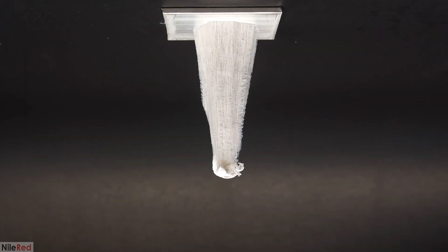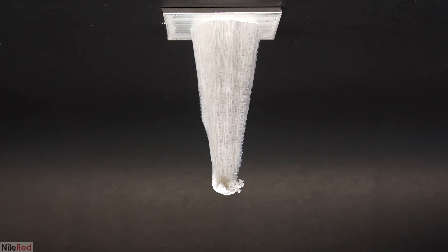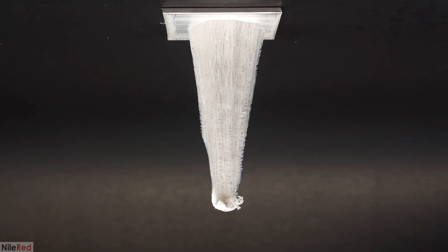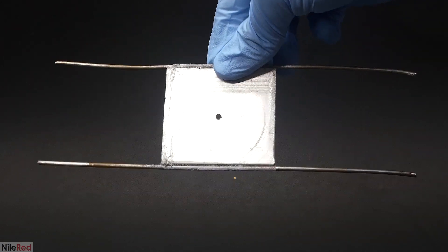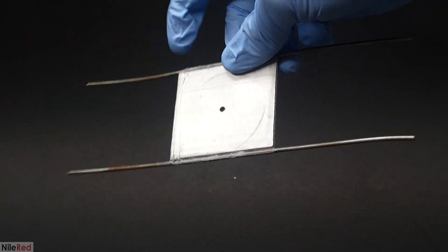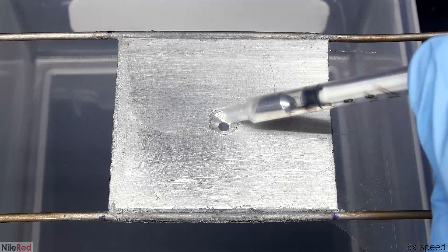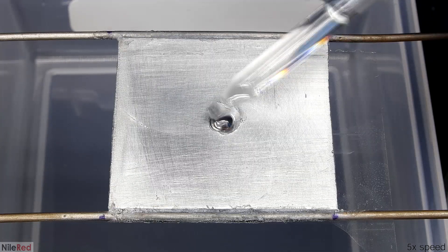This idea of doing things upside down did give me an idea though, and I wondered if it were possible to grow something from both sides of the plate at the same time. To try this out, I cut out another piece of aluminum, but this time I drill a hole all the way to the other side and I glue some pieces of a coat hanger to it.